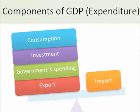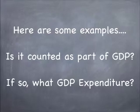This video lesson is on the components of GDP expenditure. These expenditures include consumption, investment, government spending, and net exports. Here are some examples. Is it counted as part of GDP? If so, what GDP expenditure?